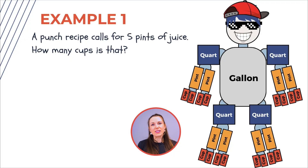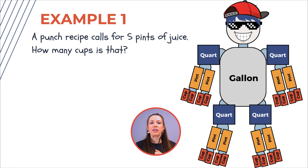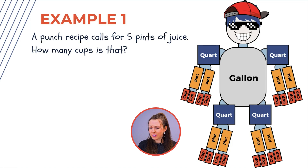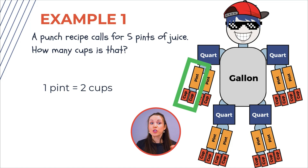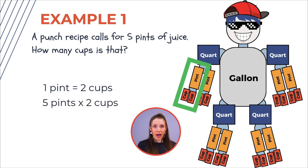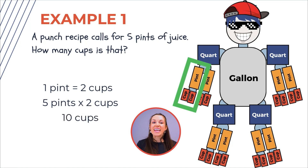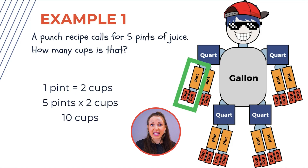Let's use our Gallon Man and Gallon Gal in a couple of math examples. A punch recipe calls for five pints of juice — how many cups is that? We're going to look at pints to cups. One pint is two cups, so five pints times two cups is 10 cups. The five pints of juice is really just going to be 10 cups. Thank you, Gallon Man!